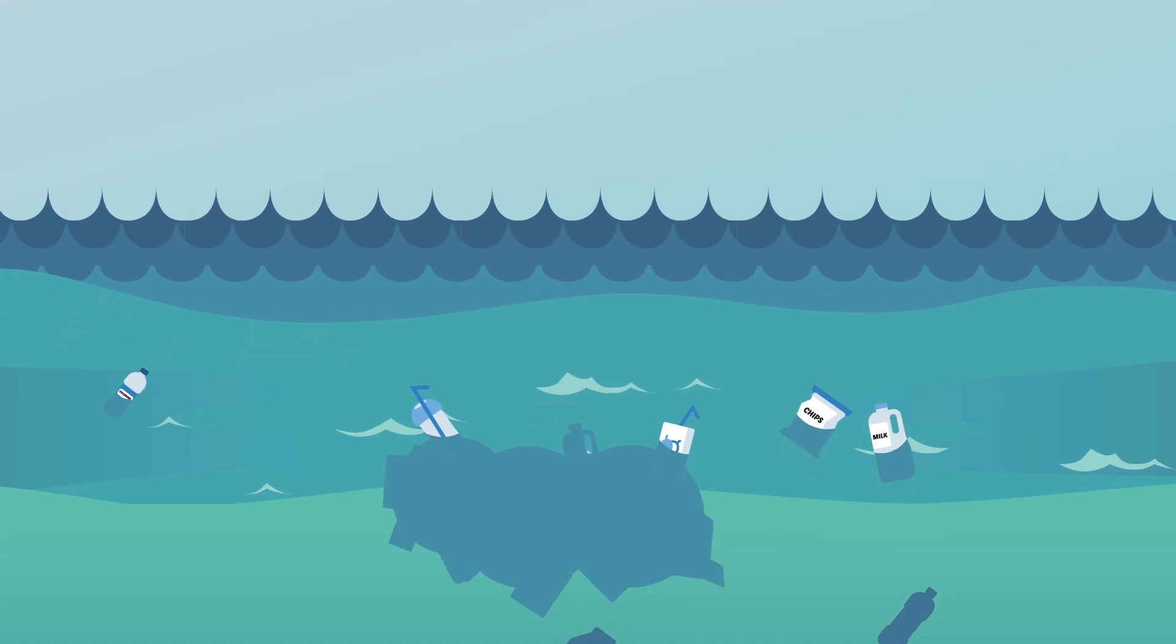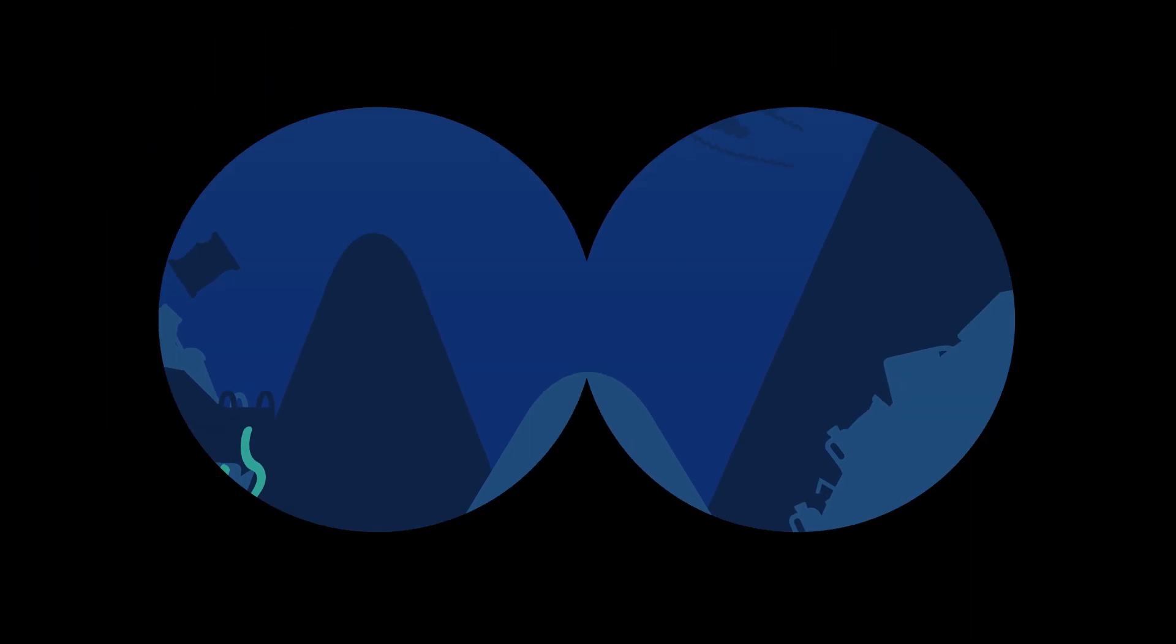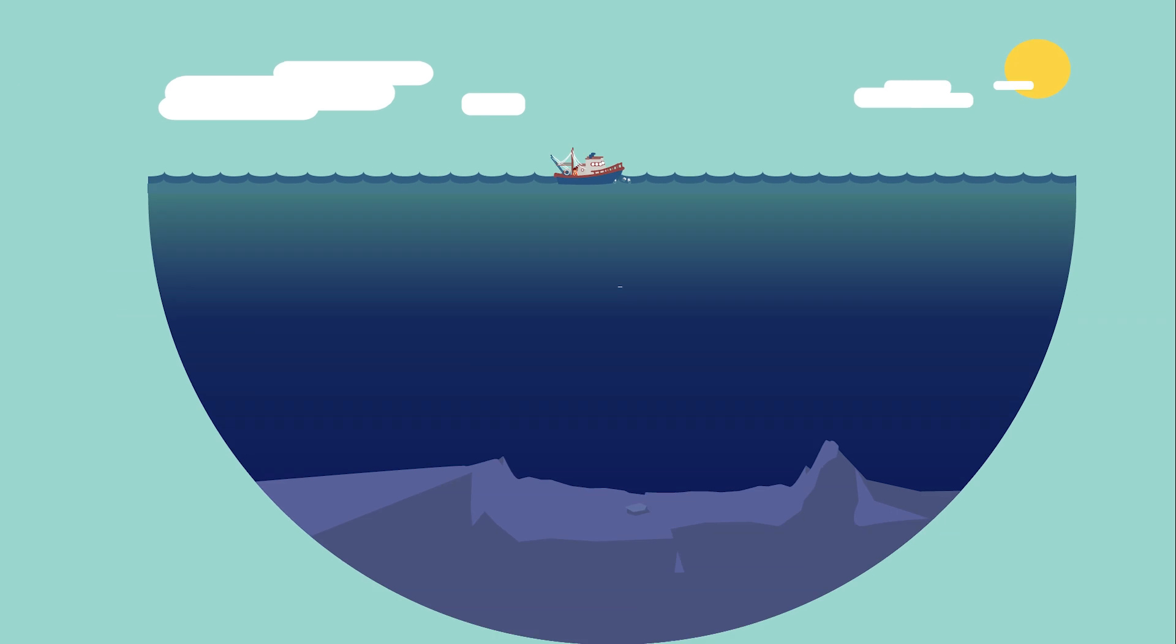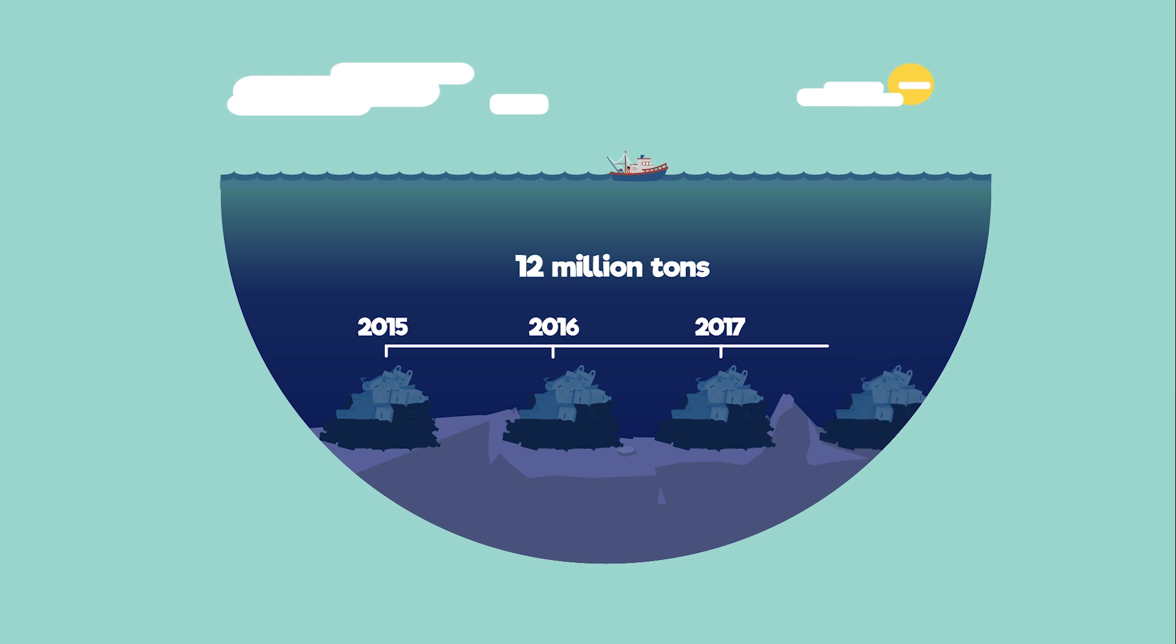Unfortunately, a good chunk of the plastic we make ends up in our oceans. And because plastic takes so long to break down, it's just building up and up and up. Scientists have calculated that around 12 million tonnes of plastic is added to our ocean every year.